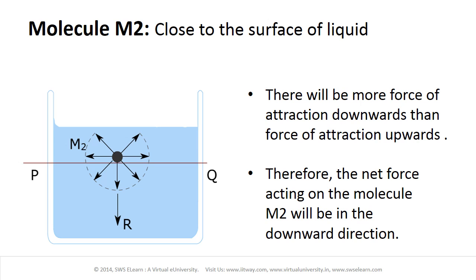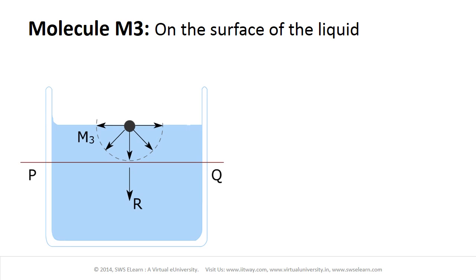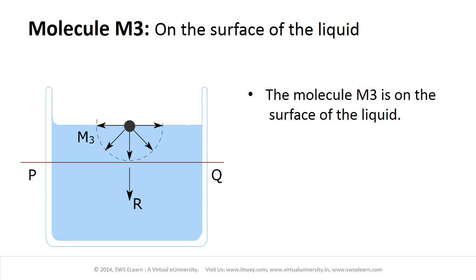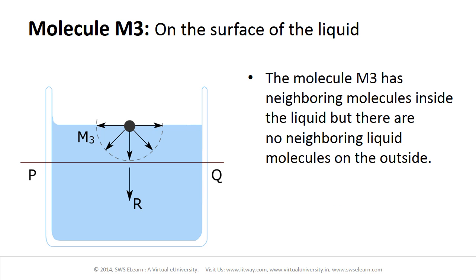And lastly, let us consider the situation of molecule M3. Here, the molecule M3 is on the surface of the liquid. The half part of the sphere of influence of M3 lies outside the liquid and the other half lies inside the liquid. The molecule M3 has neighboring molecules inside the liquid but there are no neighboring liquid molecules on the outside.